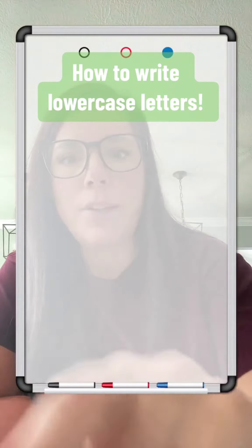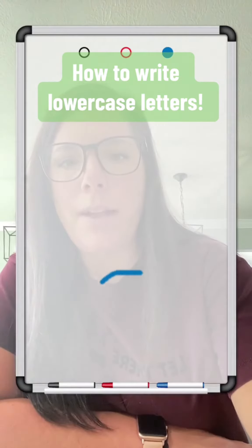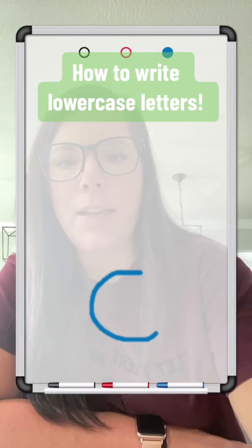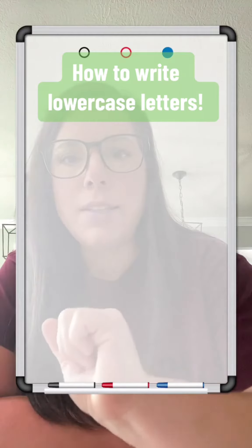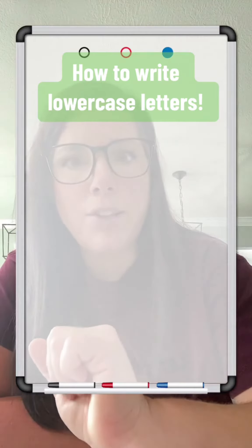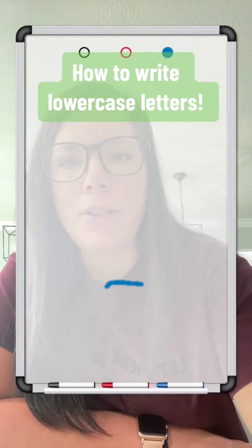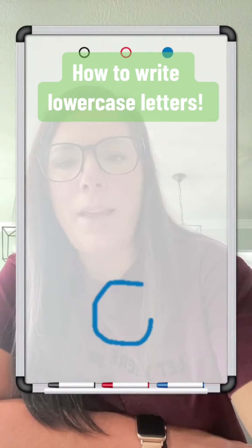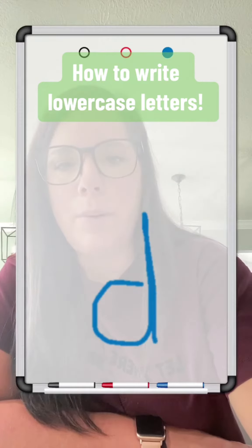C is just a magic C — it's one little curve, magic C. D is a magic C letter. We're going to start with that magic C, up like a helicopter, up taller, back down bump.